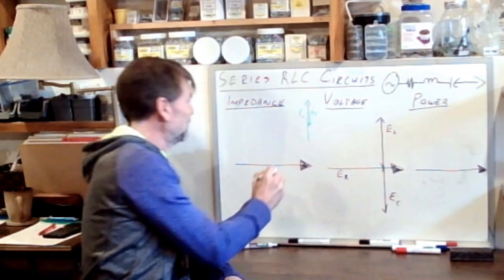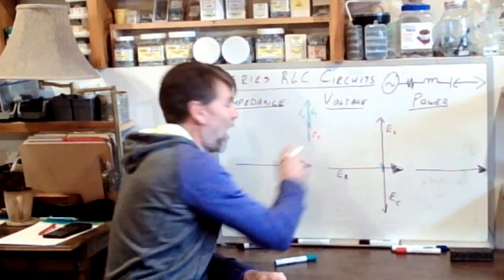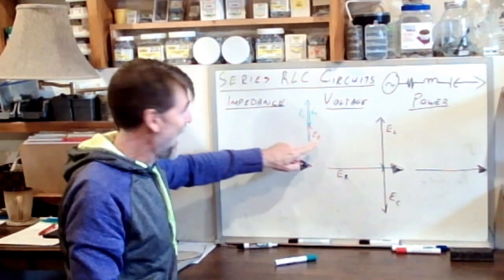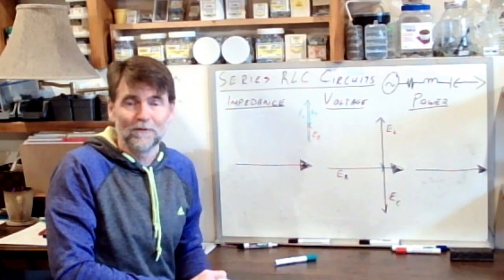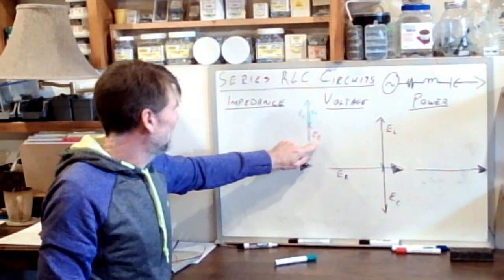What we're left with, I'll call it ER for resultant, just for a moment. That's E resultant after we add EL to EC. Because they're out of phase by 180 degrees, what we're doing is simply subtracting them, removing one from the other, and we're left with the difference, ER.